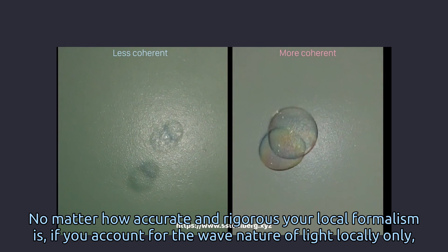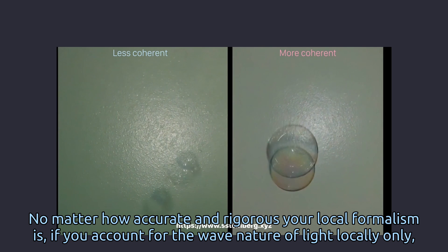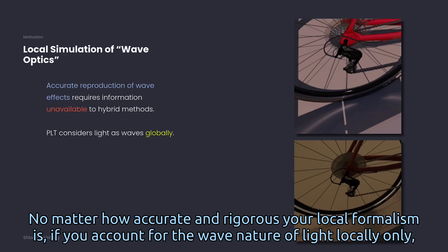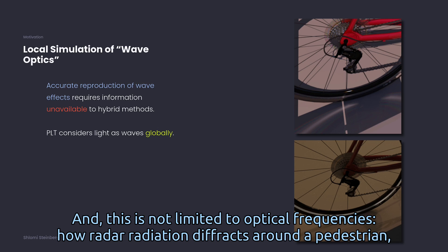The difference lies almost exclusively in the wave properties of light. No matter how accurate and rigorous your local formalism is, if you account for the wave nature of light locally only, then your local simulation does not have the capacity to accurately reproduce wave effects.